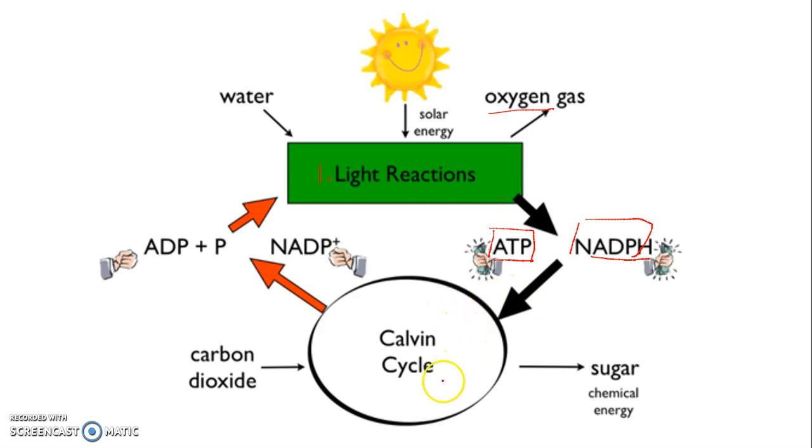The Calvin cycle goes through various steps where carbon dioxide is added to make sugar, or what we call chemical energy. So we started with solar energy and that was converted into chemical energy. That is photosynthesis.